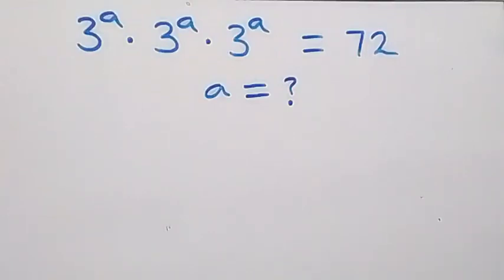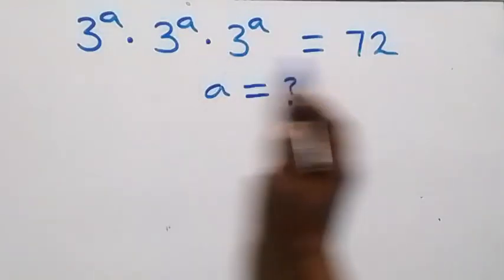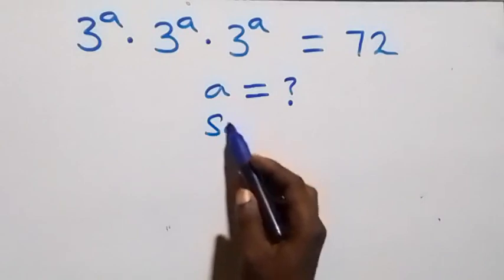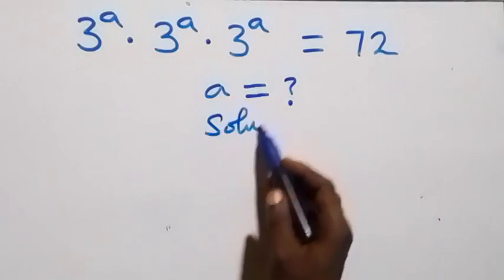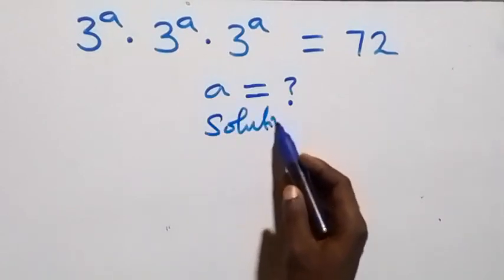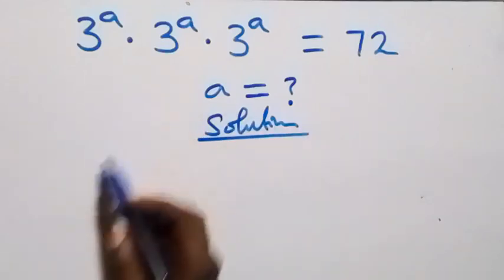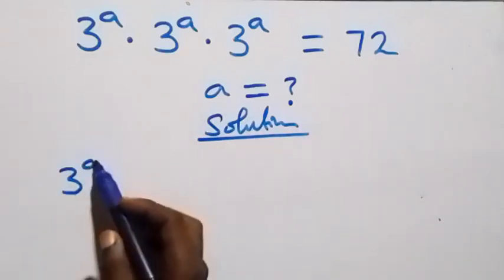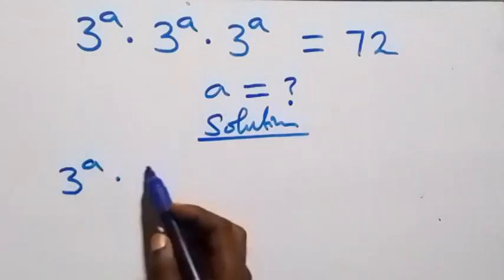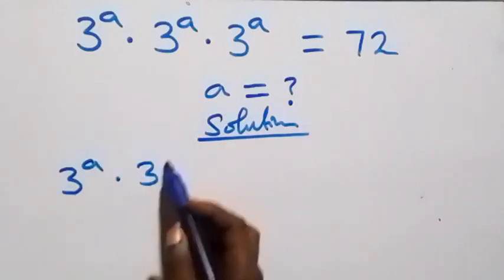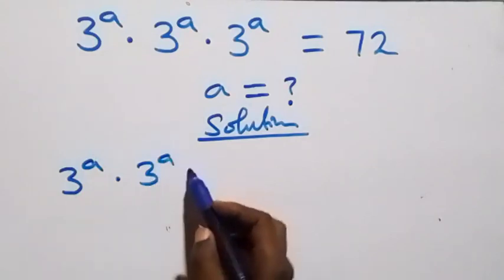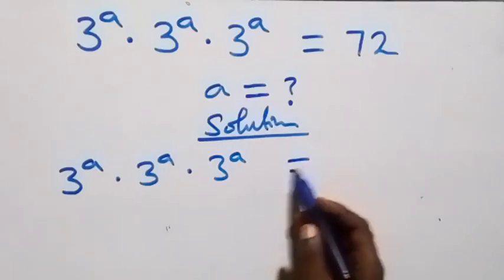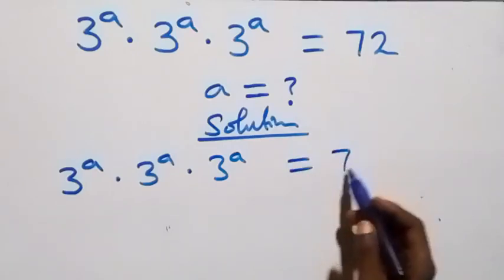Hello, you are welcome. How to solve this nice exponential equation. From what we have here: three raised to power a, times three raised to power a, times three raised to power a, equals 72.